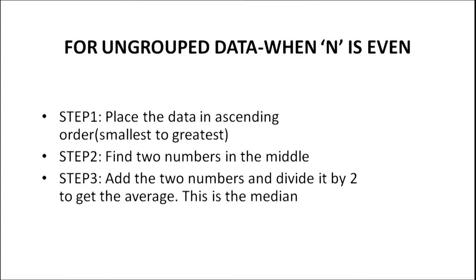When N is even: Step 1, place the data in ascending order from smallest to greatest. Step 2, find the two numbers that come in the middle position. Step 3, add the two middle numbers and divide by 2 to get the average — this becomes the median score.